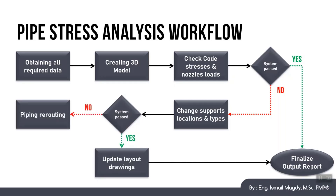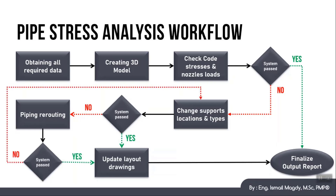But if the system still fails even with multiple changes in the supporting system, we need to go with the next option which is pipe rerouting. One of the most common ways to absorb the excess stresses in the system is to provide what is called an expansion loop. We will talk more about the expansion loop and other pipe rerouting techniques later on during our AutoPipe modeling. Once we finalize, we check again if the system passes or not. If it does, you update the layout drawing and finalize the output report. If it still fails, you keep repeating this cycle until you manage to have a safe system.